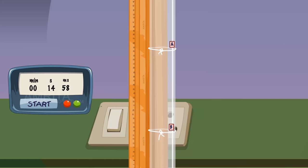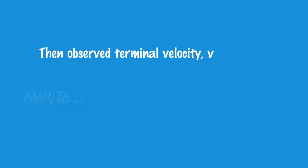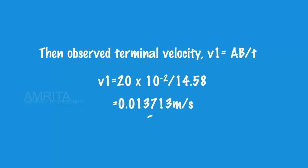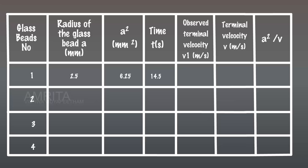Then observed terminal velocity of the bead can be calculated using the equation V1 = AB/T. That is V1 = 20×10^-2 / 14.58 = 0.013713 meters per second. Record the observed and calculated values in a tabular column.